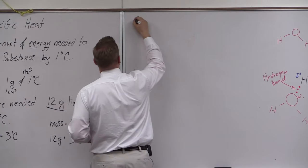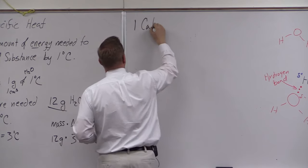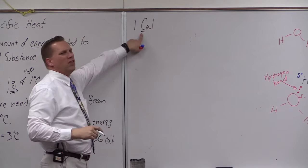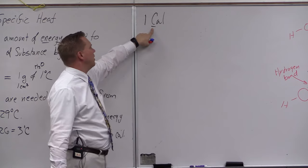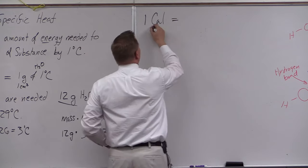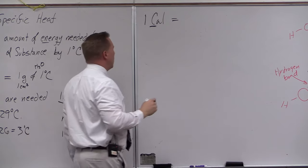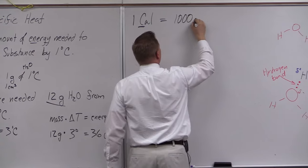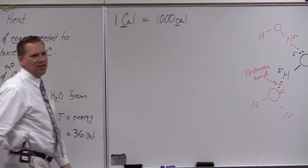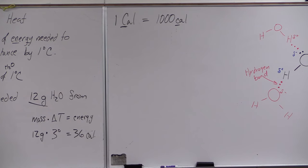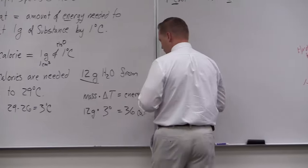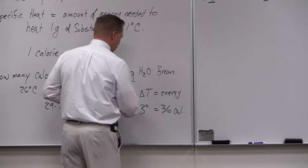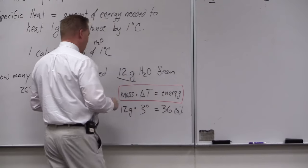One important note on these calculations: if Calorie is capitalized with a capital C — as you see on food packaging like cereal boxes or frozen pizza — that is actually equal to 1,000 calories with a lowercase c. You have to pay attention to whether it's a capital C or a lowercase c. Other than that, the math is pretty straightforward; this is really just a definition of what a calorie is.